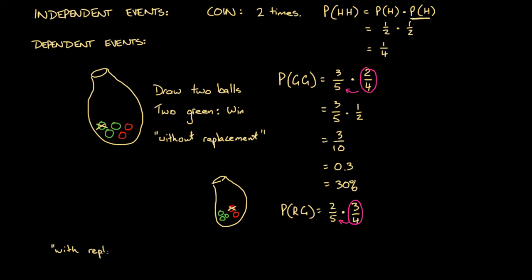Let's have a quick look at what it would be with replacement. With replacement means a different game: you pick out a ball, look at it, put it back in the bag, and then pick out another ball — potentially the same ball. You're replacing the ball after the first draw. What would be the probability of getting two greens then?